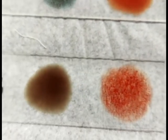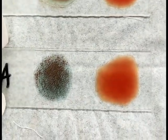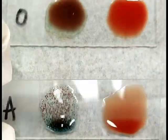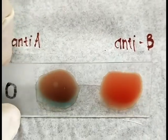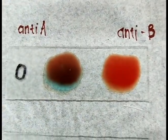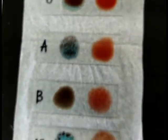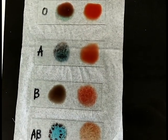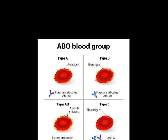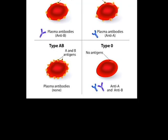Here we have the complete blood types. AB shows agglutination in both anti-A and anti-B. B shows agglutination only in anti-B. A shows agglutination only with the anti-A reagent. And for O, there is a complete absence of agglutination in both anti-A and anti-B antiserum.